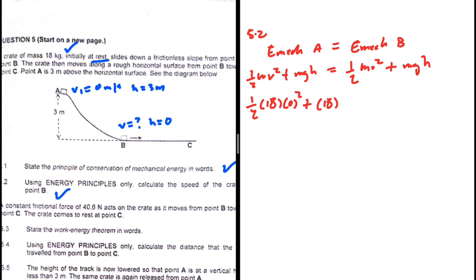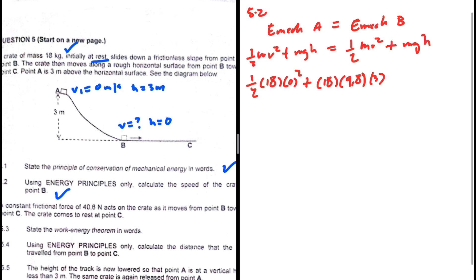Plus the potential energy: mass is still 18, gravitational acceleration 9.8, and then the height is 3. This equals half the mass times the velocity squared, which is what we're interested in, plus the potential energy: mass is 18 kg, gravitational acceleration 9.8, and the height is zero at point B.